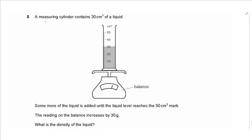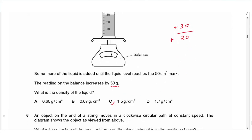Question 5: a measuring cylinder contains 30 cm³ of liquid; more liquid is added until the level reaches 50 cm³, and the balance reading increases by 30 grams. The increase in mass is 30 g and the increase in volume is 20 cm³. Density equals mass over volume: 30 divided by 20 gives 1.5 g/cm³ for the density of the liquid.